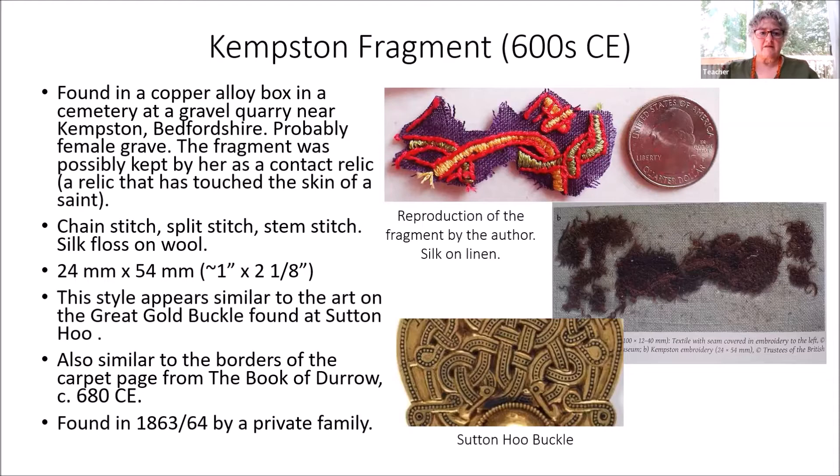This fragment is chain stitch, split stitch, and stem stitch done in silk on a wool ground. It's tiny, as you can see when I compare it to the size of a quarter. The style appears similar to the art found on the great gold buckle from Sutton Hoo and also similar to the borders of the carpet page from the Book of Doro. This was found in 1863–64 by a private family.